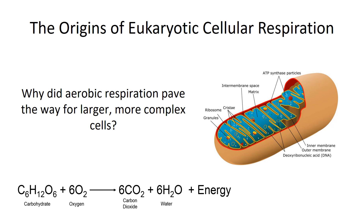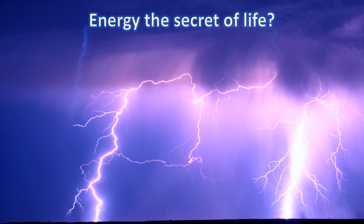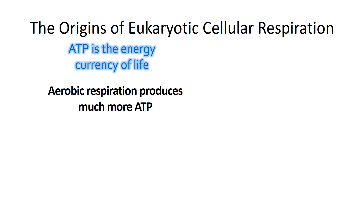Getting back to our original question: why did aerobic respiration pave the way for larger, more complex cells like eukaryotes, and eventually to multicellular life? The answer goes back to energy. Energy is the secret to life. Without a constant supply of energy, life could not exist. However, there's a catch — you have to have a usable form of energy for life. You can't just zap something in the microwave, stand out in the sun, or have lightning hit you to use that energy. We have to have energy in a usable form. That usable form of energy is ATP.